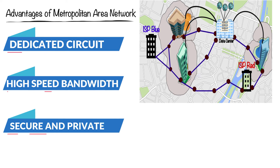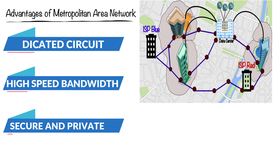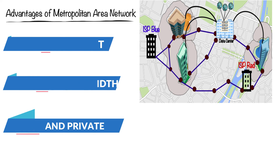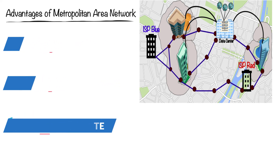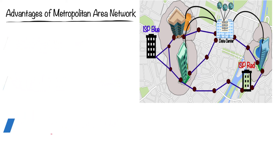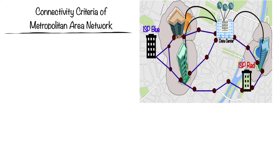The data transferred over these circuits remains secure and private to the company. If we compare this with the internet, the data is not as secure on the internet because hackers or attackers can try to intercept your traffic. But with metropolitan area network connectivity, the data remains secure and private between the branch offices.